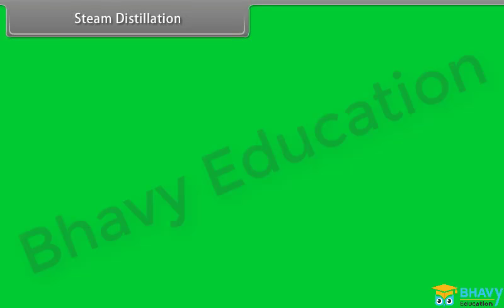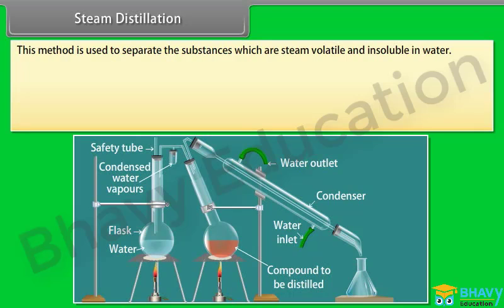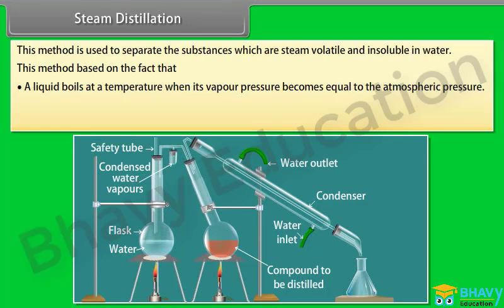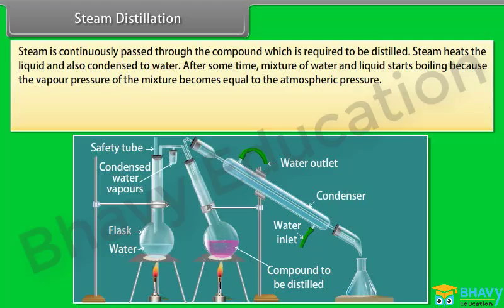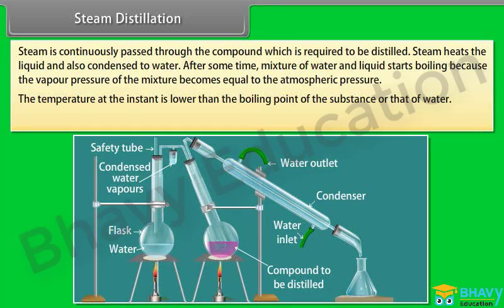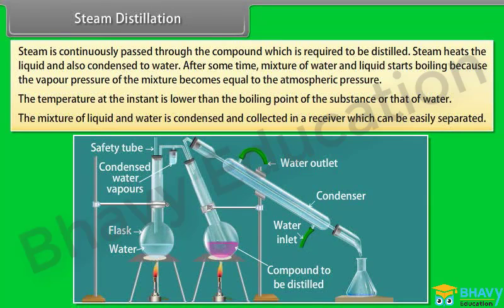Steam distillation: This method is used to separate substances which are steam volatile and insoluble in water. It is based on the fact that a liquid boils when its vapour pressure equals the atmospheric pressure, and the vapour pressure of a mixture of two immiscible liquids equals the sum of their individual vapour pressures. Steam is passed through the compound, heats the liquid, and the mixture of water and liquid starts boiling. The mixture of liquid and water is condensed and collected in a receiver, and can be easily separated.